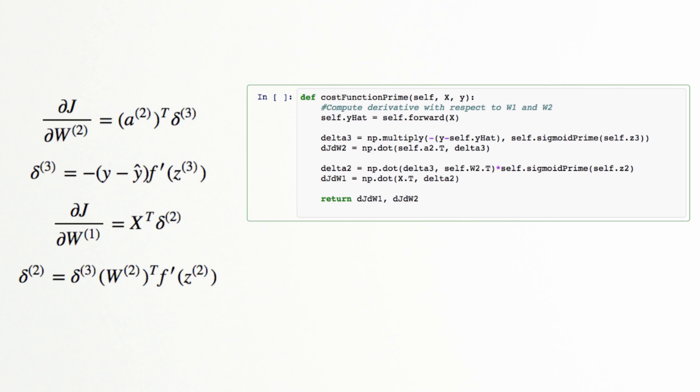Last time, we did a bunch of calculus to find the rate of change of our cost, J, with respect to our parameters, W. Although each calculus step was pretty straightforward, it's still relatively easy to make mistakes.